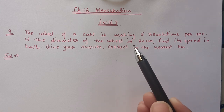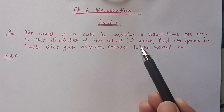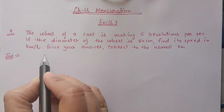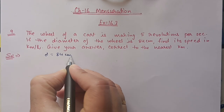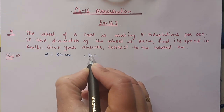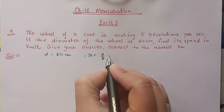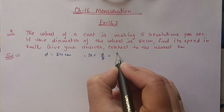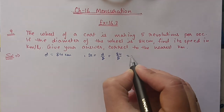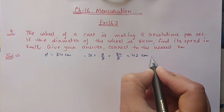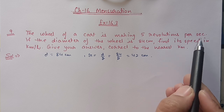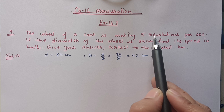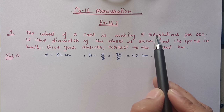The diameter of the wheel is given, so we can find the radius. Diameter is 84 centimeters, so radius will be half of 84, which is 42 centimeters. First we will calculate how much distance it will cover in one second. In one second it is covering 5 revolutions, and one revolution means one circumference.